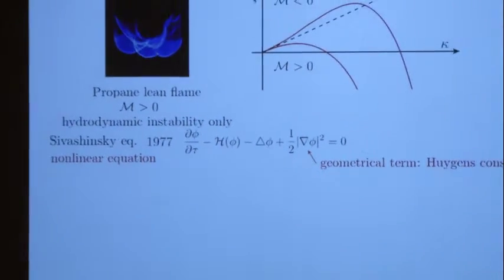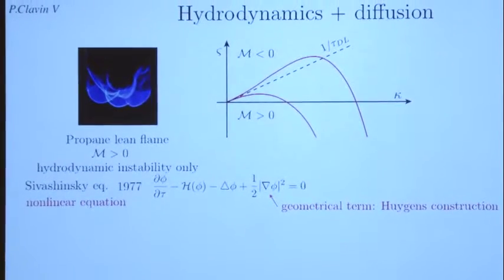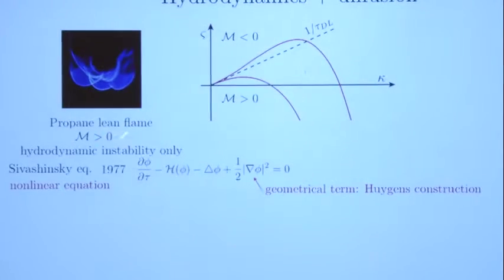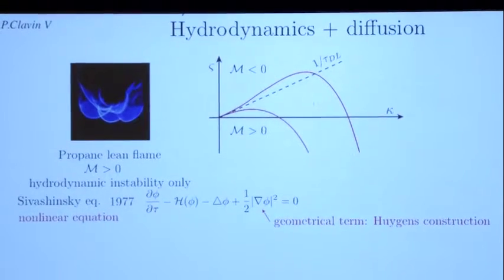It is not difficult to obtain this equation, but the original paper was difficult to understand. This equation is valid only when the gas expansion is small—for a small difference of density—in order to have a small instability. It is an exact equation in the double limit of small gas expansion and large Lewis number with beta times (Lewis minus one) of order unity. This equation was studied mathematically with a lot of numerical calculations and describes what we call a cellular flame very well.